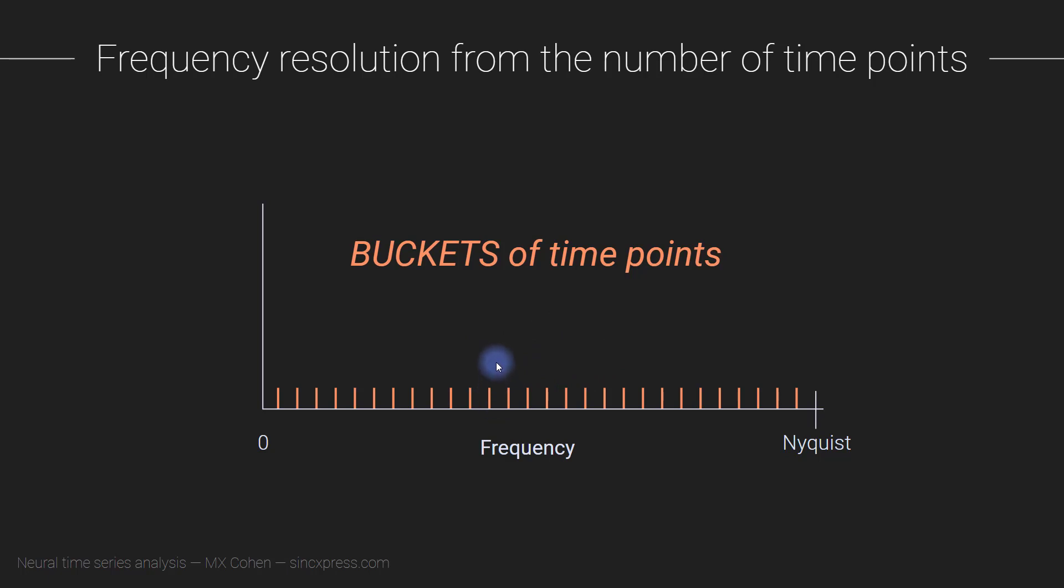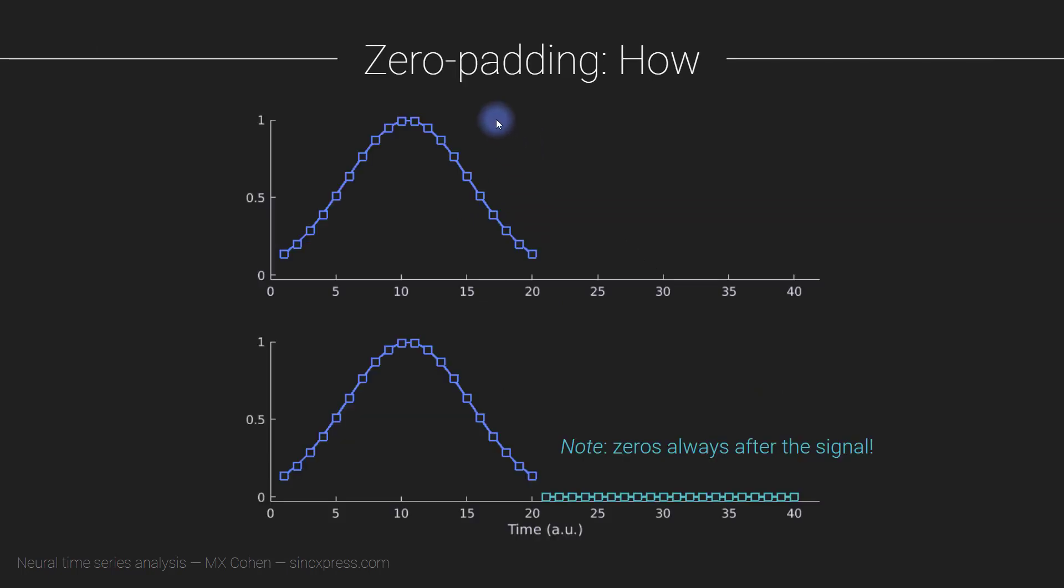Perhaps this is the frequency that you are flickering a light and you want to see the exact light frequency represented in the brain. If you cannot just arbitrarily cut longer segments, what you can do is a procedure called zero padding.